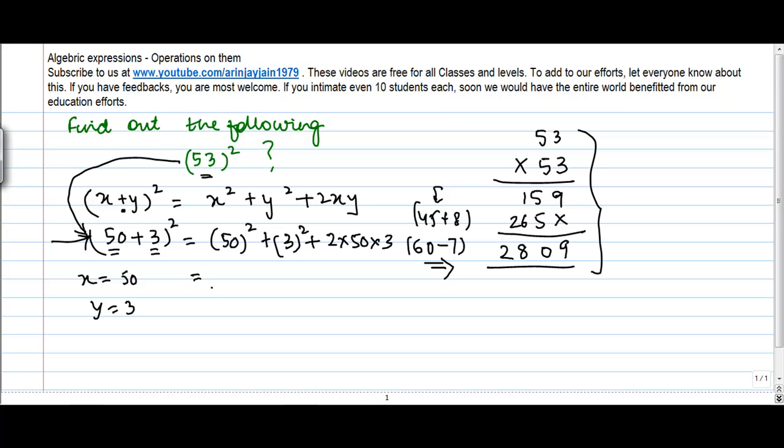Now doesn't it sound easy? So 50 square and do I know what's the square of 5? 5 square is 25 then I put in 20 plus 9 plus 2 into 50, 100 into 3, 300. So 2500 plus 300, 2800, 2809 which is the same as I would have got through the manual calculation.